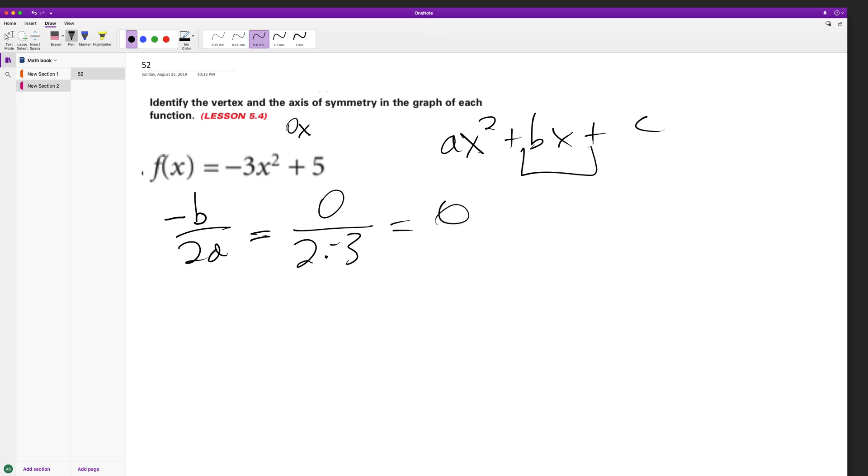So our axis is going to be at 0. And when we plug in 0, we get 5 out.